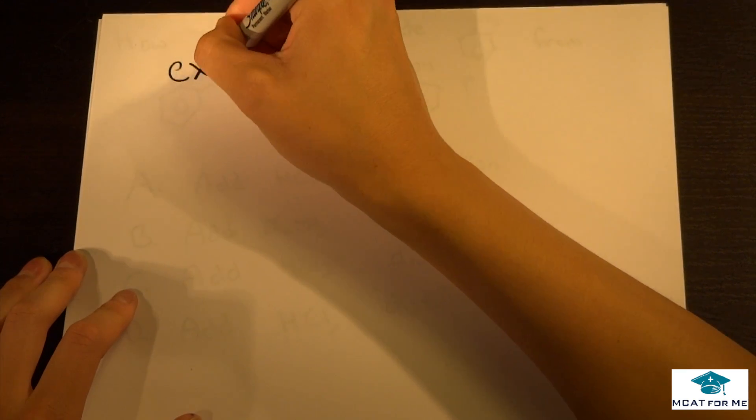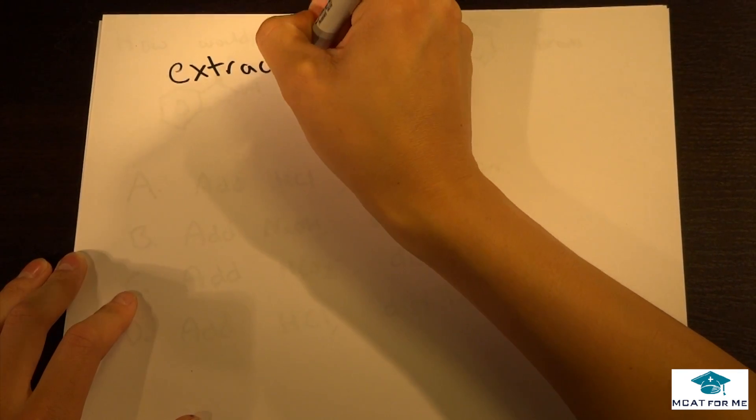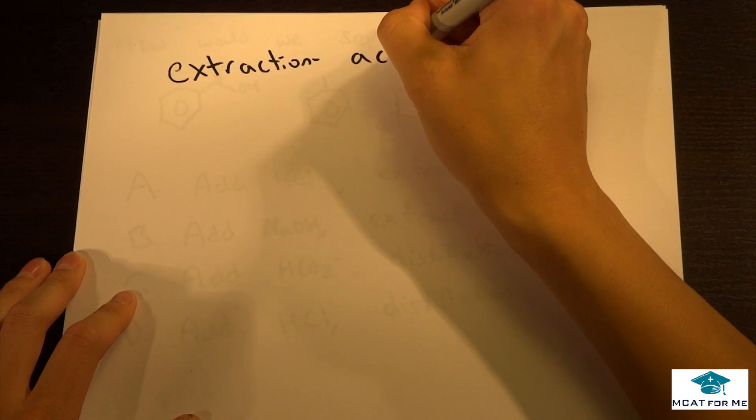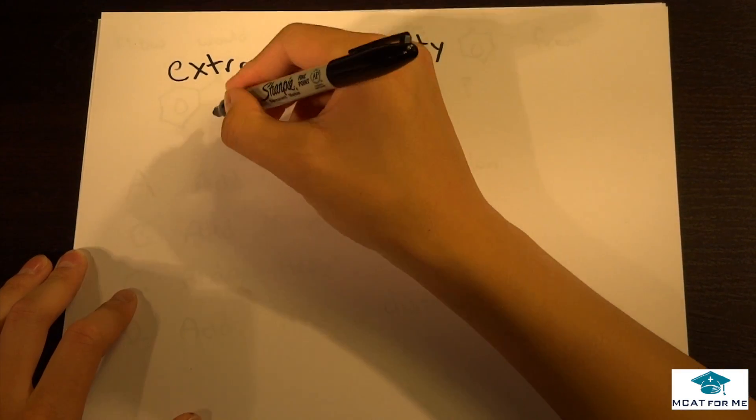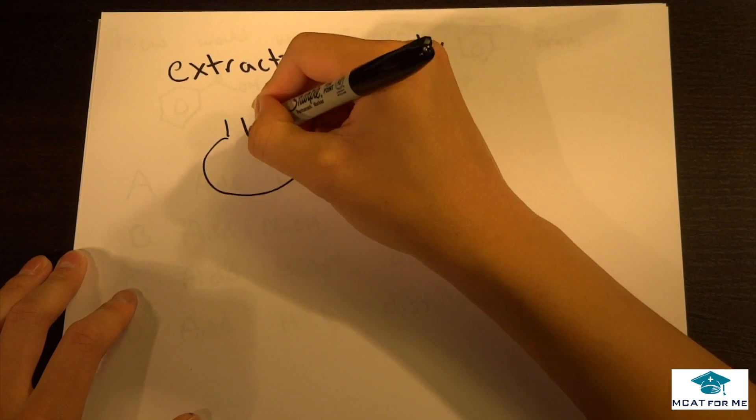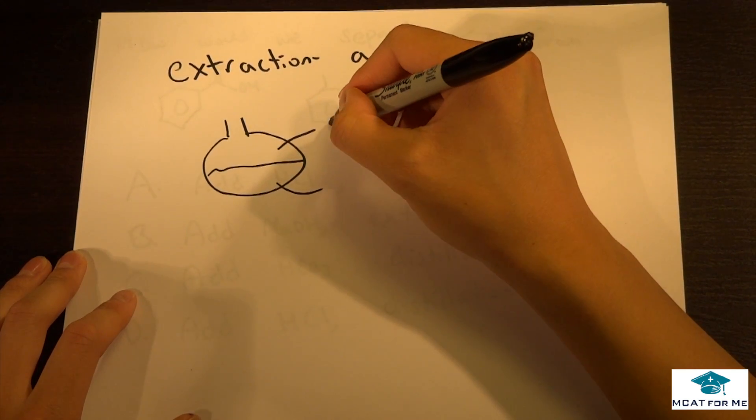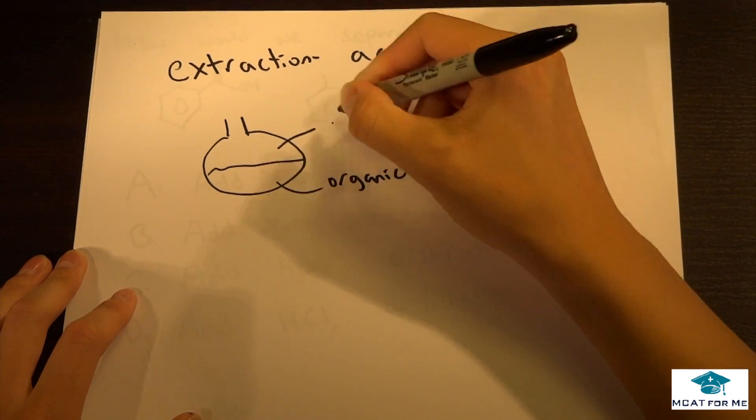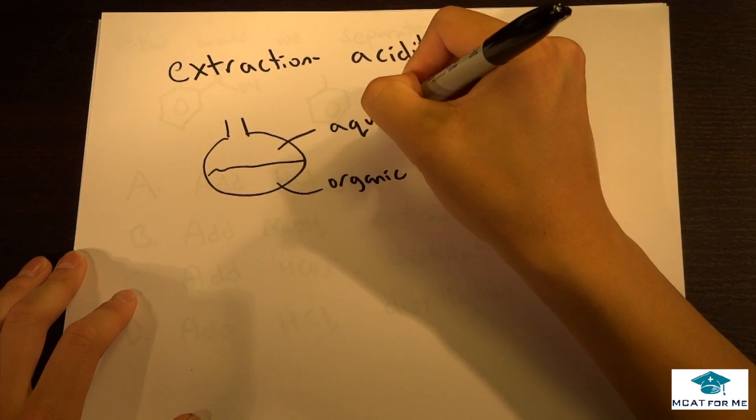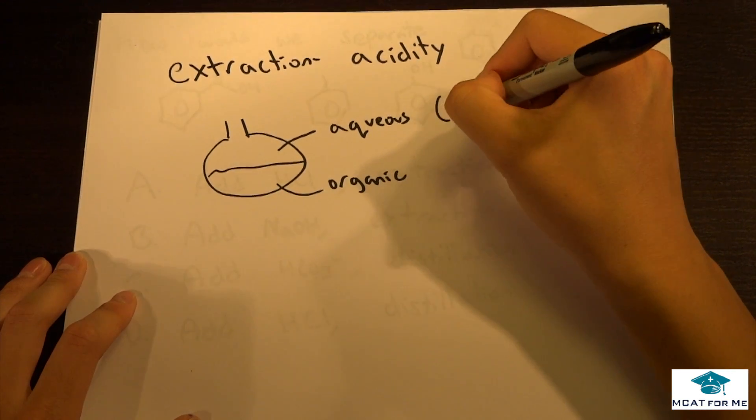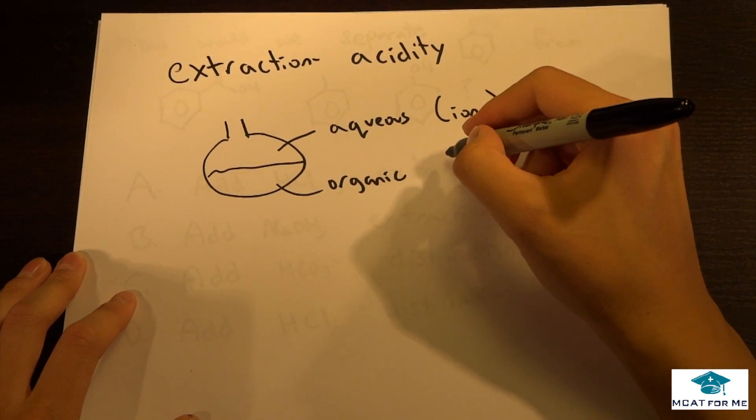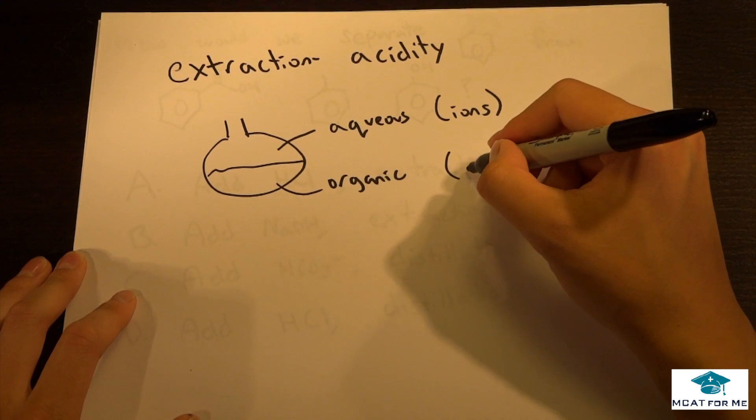So extraction separates things by acidity. And how this works is we have this little flask and we're going to have something called the organic layer and the aqueous layer. And the aqueous layer has all these ions and the organic layer has everything else.